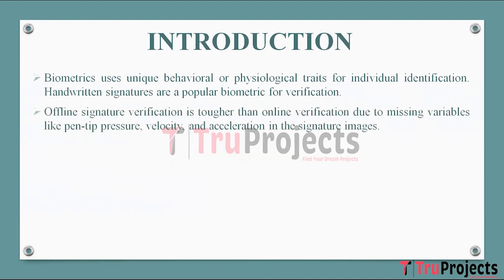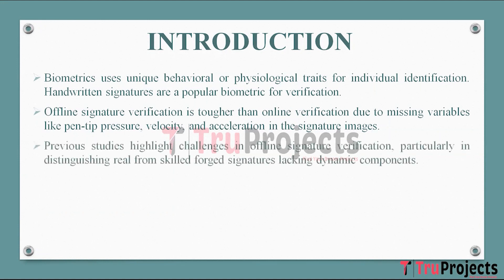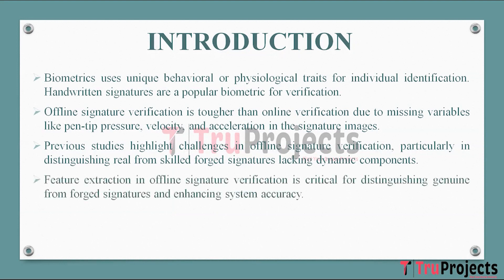Offline signature verification is more challenging compared to online verification because dynamic variables like pen-tip pressure, velocity, and acceleration, which provide valuable information for authentication, are not available in static signature images. Previous research has emphasized the difficulty in offline signature verification, especially in differentiating authentic signatures from skilled forgeries. Skilled forgeries often lack the dynamic components present in genuine signatures, making the task more challenging.